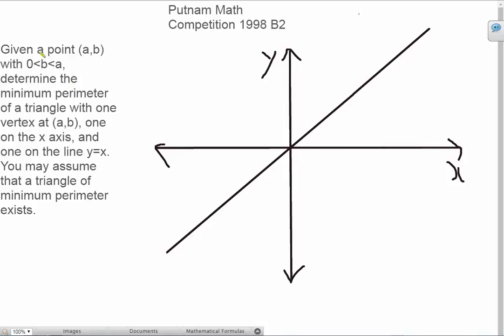The question states: given a point (a,b) with 0<b<a, determine the minimum perimeter of a triangle with one vertex at (a,b), one on the x-axis and one on the line y=x. You may assume that a triangle of minimal perimeter exists.